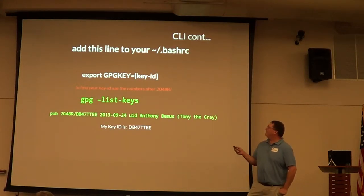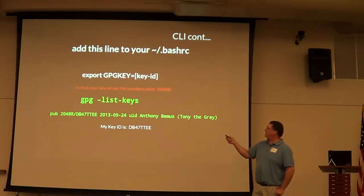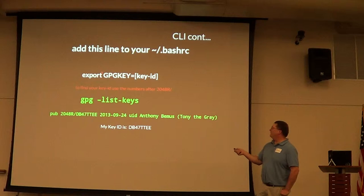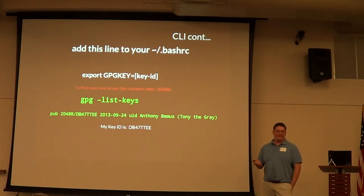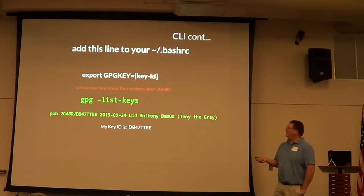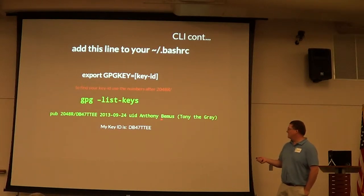In your .bashrc, you want to add a line to put it in your environment variables. What happens is you put your key ID — which you look up with list-keys — and it goes through the whole list.